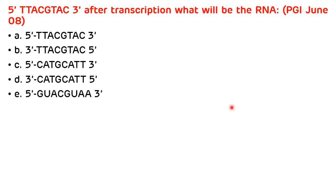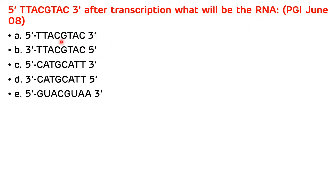The first question, from PGI June 2008: given a DNA sequence, after transcription what will be the RNA sequence? Since RNA does not contain thymine, we exclude all options containing thymine. The correct answer is E.